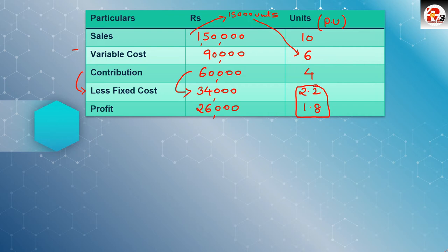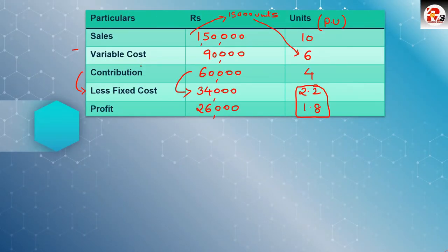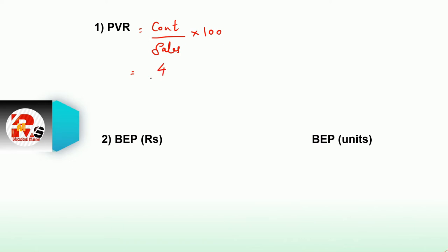We used the same format. The only difference is that since units were given in the question, we have prepared an extra column for per unit figures. If you have the total amount, divide by units to get per unit. If you have per unit, multiply by units to get the total amount. Now we can calculate: contribution is 60,000, sales is 1,50,000, and per unit contribution is Rs. 4.